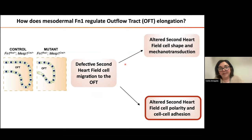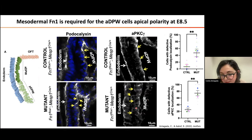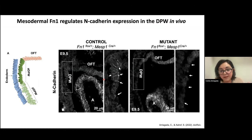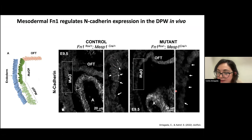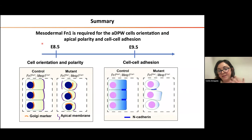We then tested whether the second heart field had defects in cell polarity and cell-cell adhesion. Using two apical markers — podocalyxin and aPKC — we found that early at E8.5 these markers localize in the apical membrane of the second heart field in controls, but in mutants they lose polarity and are also localized in the basolateral membrane. We then tested N-cadherin, a cell-cell adhesion marker. Early at E8.5, N-cadherin expression is similar between control and mutant. But at E9.5, in controls it is nicely localized in the anterior dorsal pericardial wall, while mutants lose cell-cell adhesion. In summary, early in development we have changes in cell shape and polarity, which then generate a loss of cell-cell adhesion.